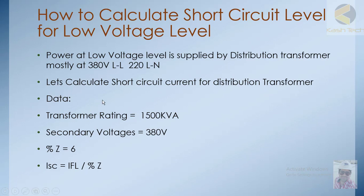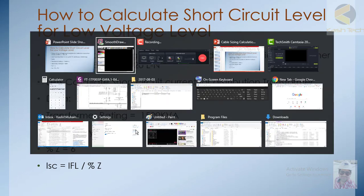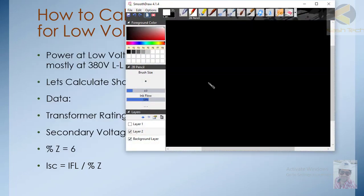The data for this transformer: the kVA rating is 1500 kVA. We are calculating secondary voltage, which is 380 volts. The percentage impedance of the transformer is 6%. The short-circuit current formula is: I_SC = I_full-load divided by percentage impedance.